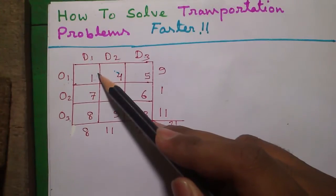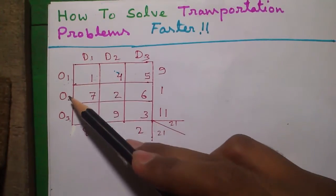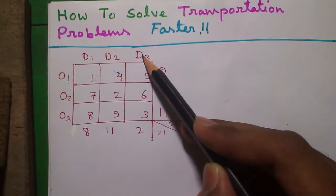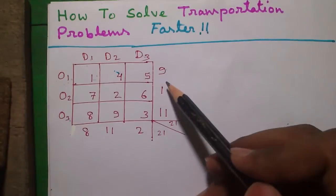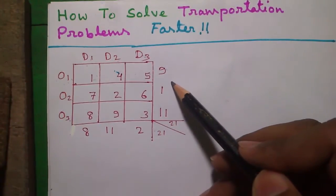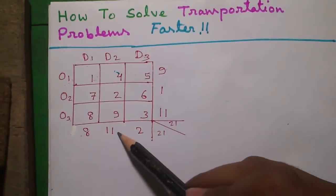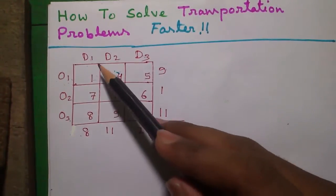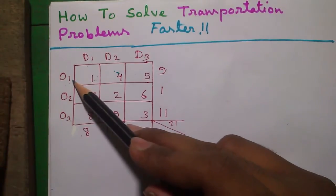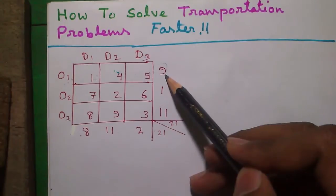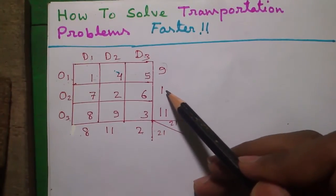So our objective is to transport goods from 3 origins to 3 destinations in such a manner so that our total transportation cost is minimum. Next, these vertical values outside are called the supply values. That means in origin 1 we have total supply or total capacity of 9 units of goods. Similarly in O2 it's 1 unit of goods.